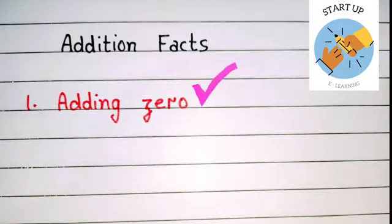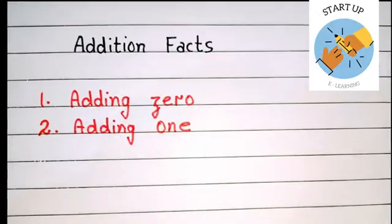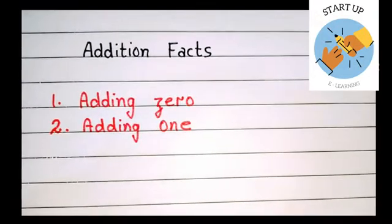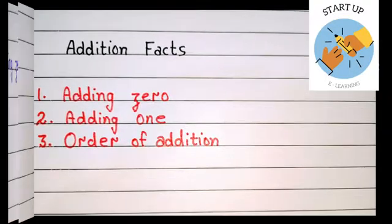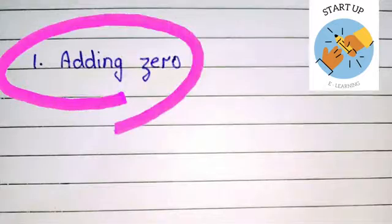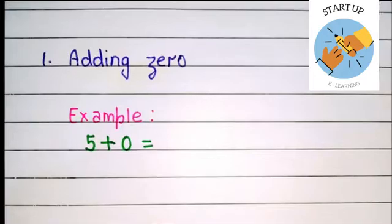...addition fact is adding zero. Second addition fact is adding one. Third and the last addition fact is order of addition. Let's take the first addition fact, that is adding zero. We will understand this through some examples, children.